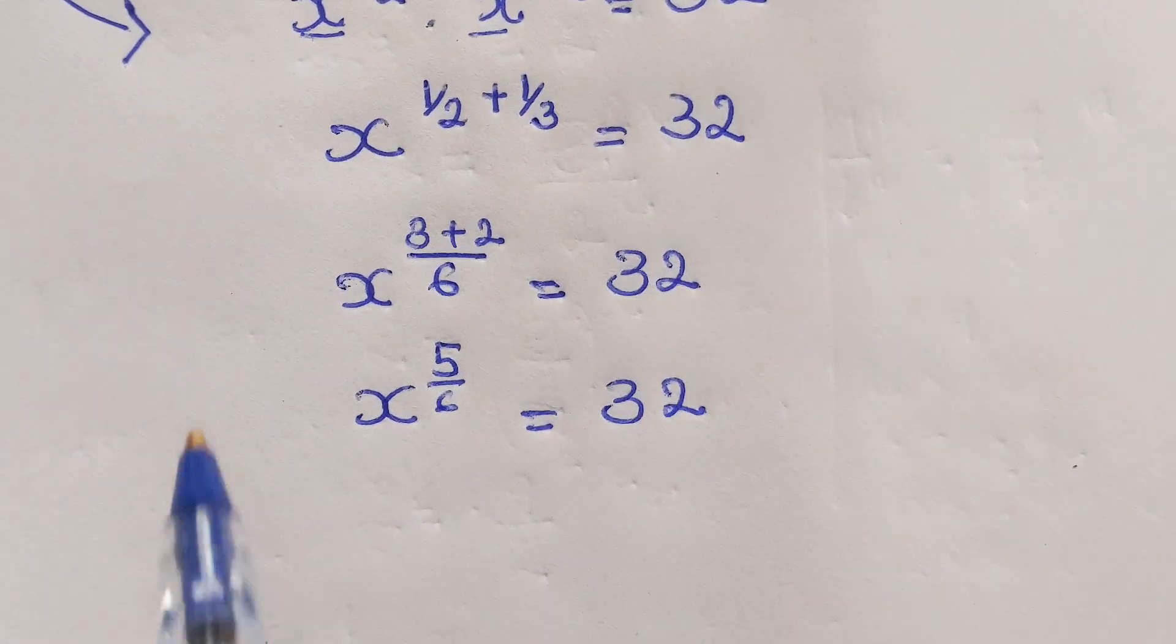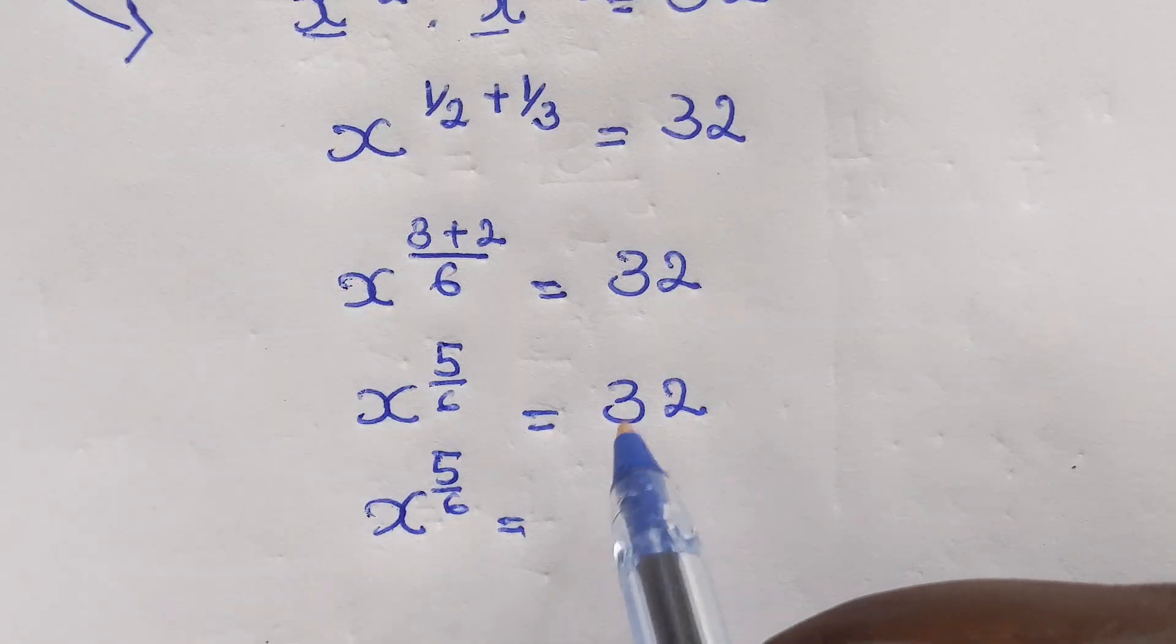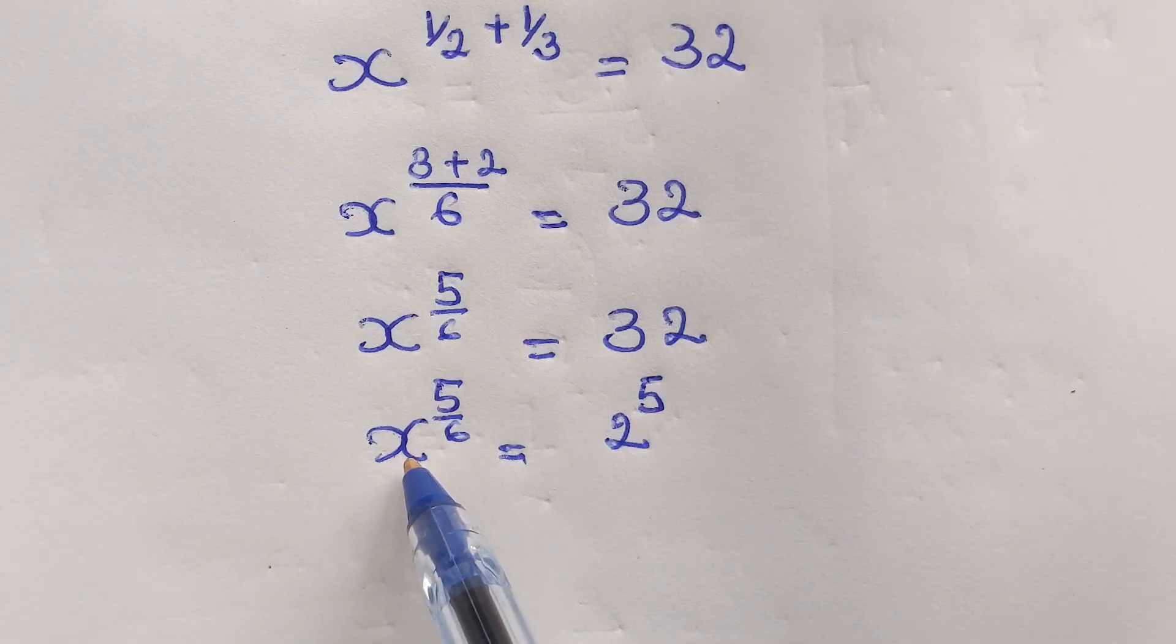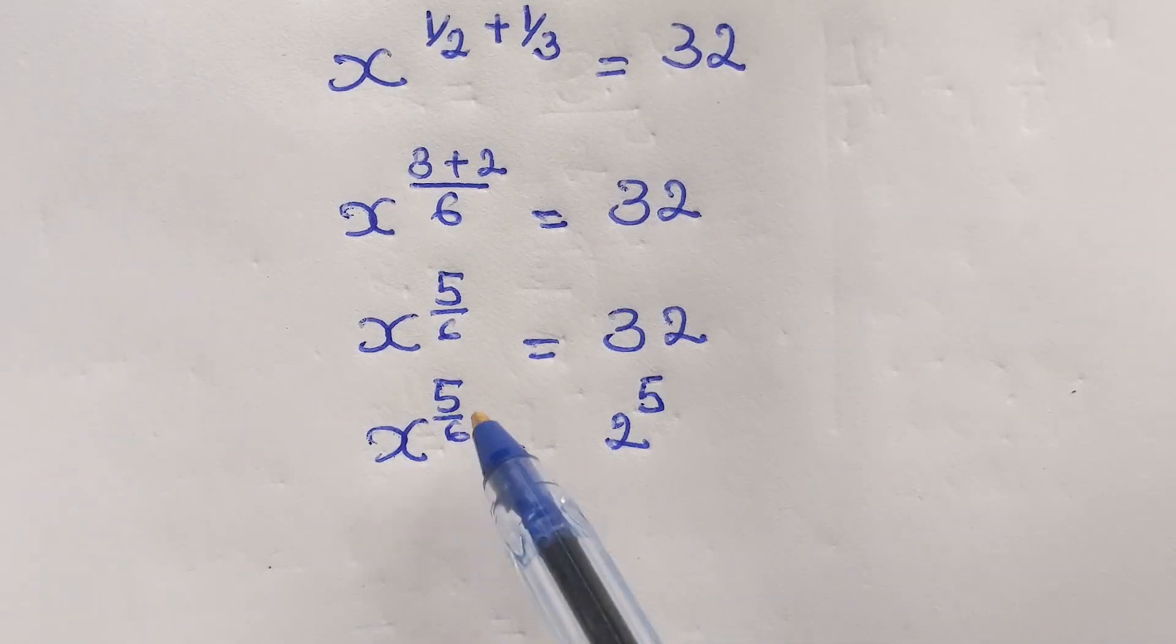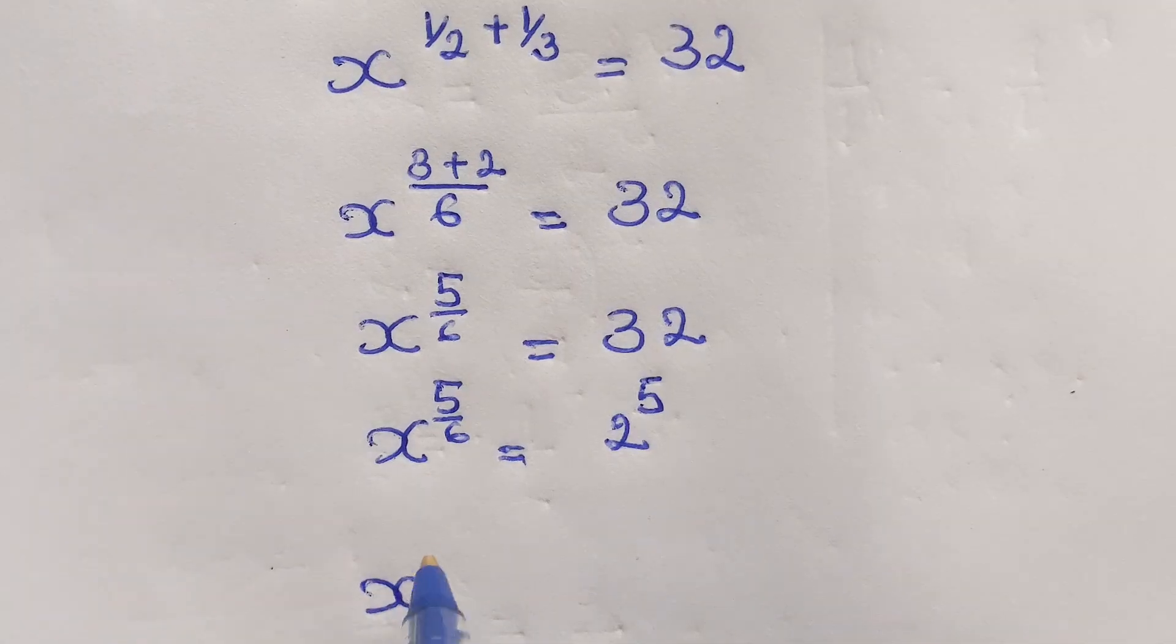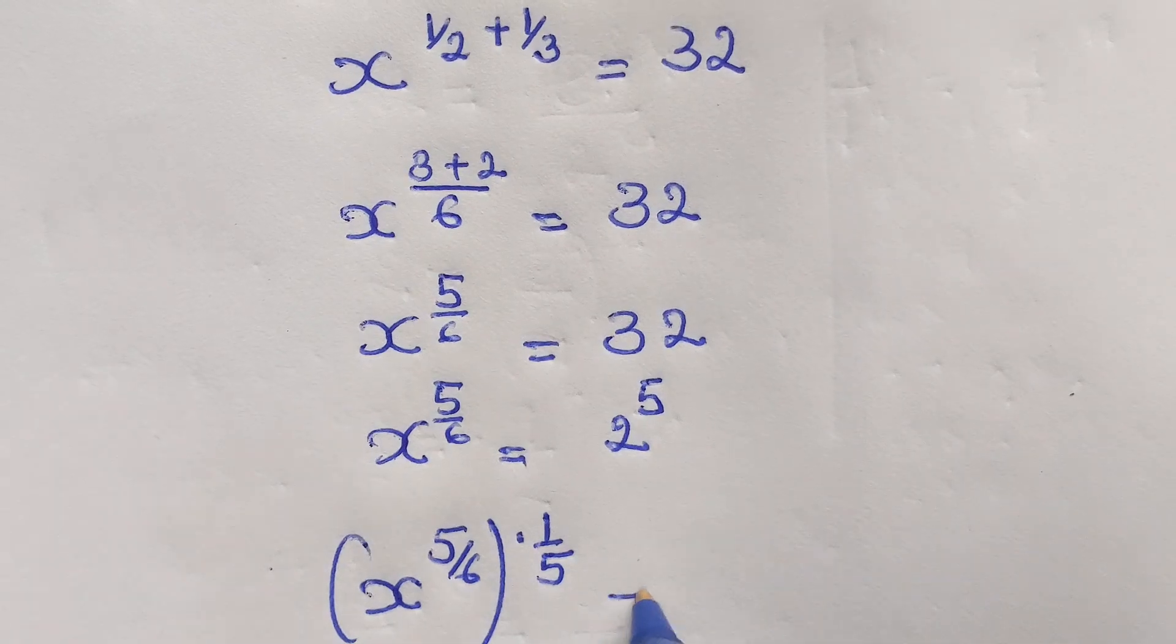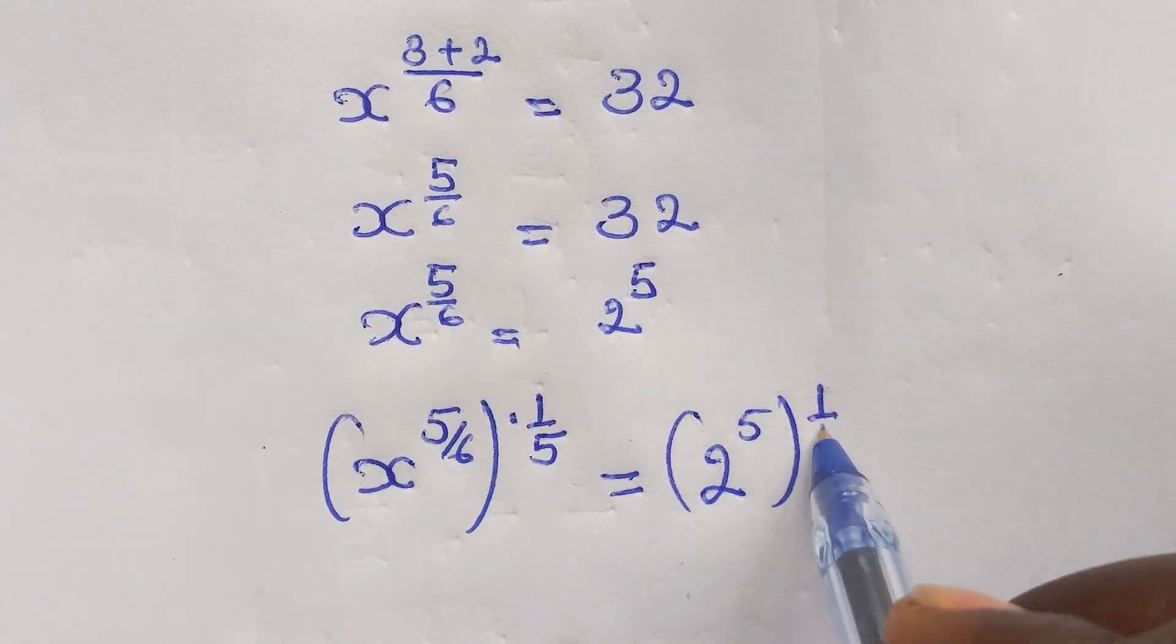And x power 5 over 6 equal to 32 can be equal to 2 power 5. And of course, this part of x power 5 over 6, we are going to move this 5, which is up here. This is equal to x power 5 over 6, then power times 1 over 5 and equal to 2 power 5 times 1 over 5.